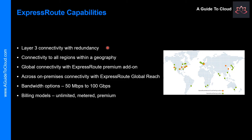So what are the benefits? The first one is Layer 3 connectivity. Microsoft uses BGP, an industry-standard dynamic routing protocol, to exchange routes between your on-premises network, your instances in Azure, and Microsoft public addresses. Microsoft establishes multiple BGP sessions with your network for different traffic profiles.